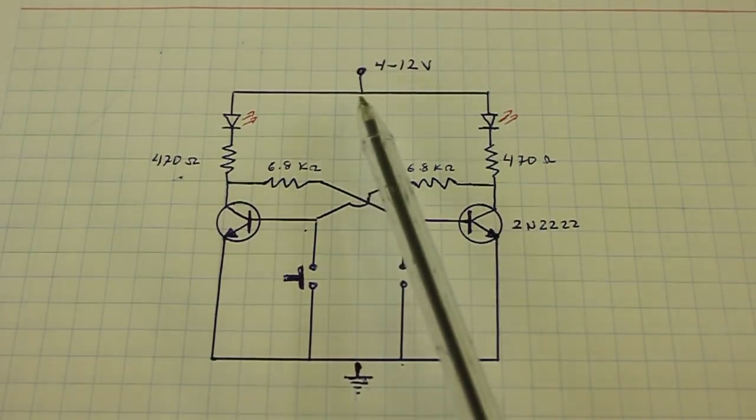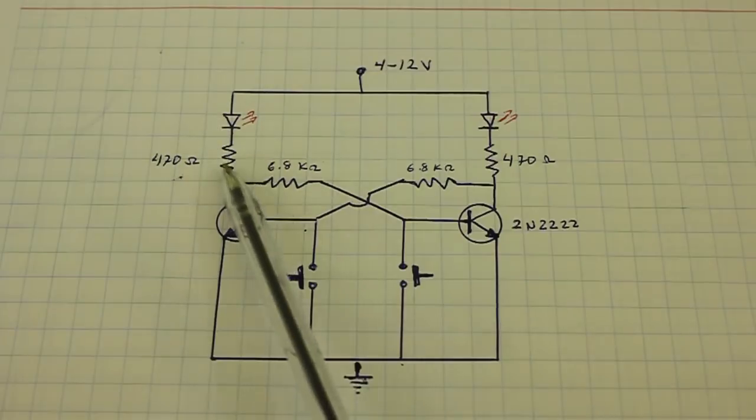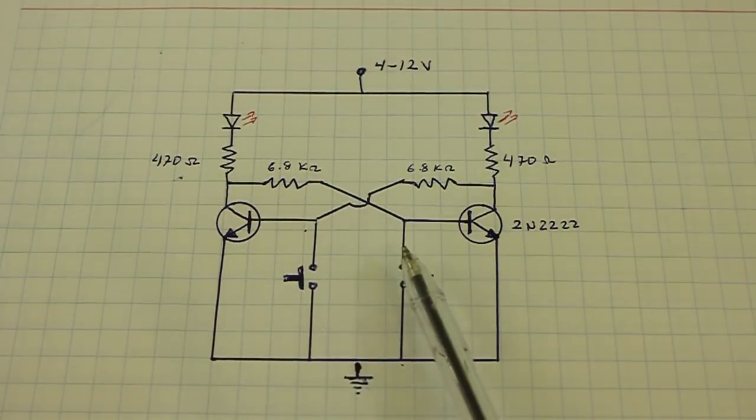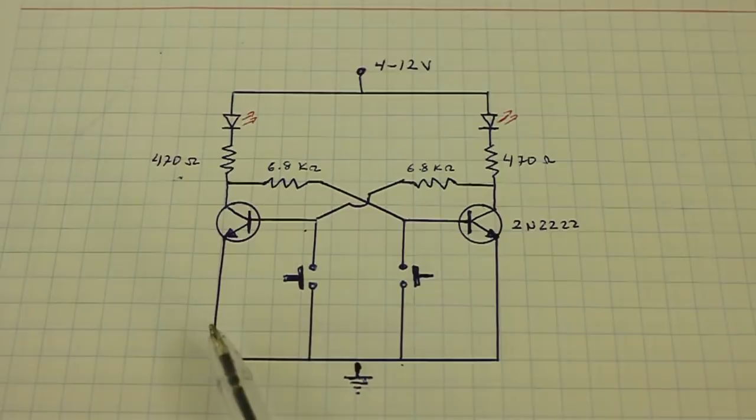Notice that the current cannot flow through this path because it prefers this other path of low resistance.